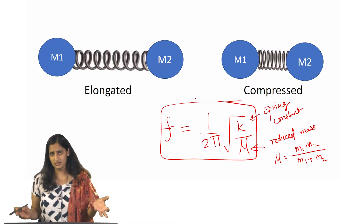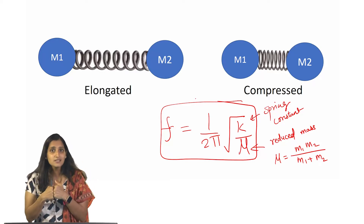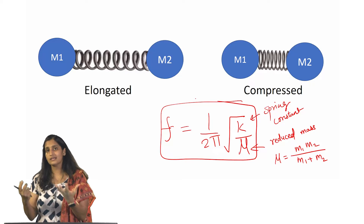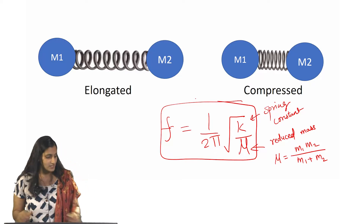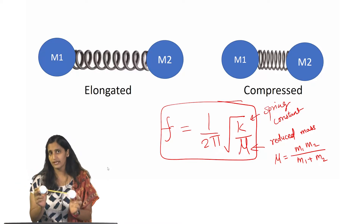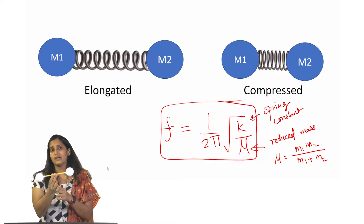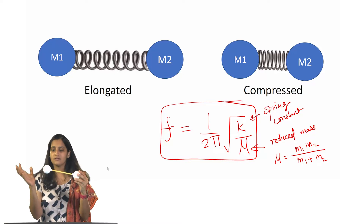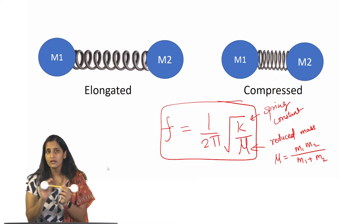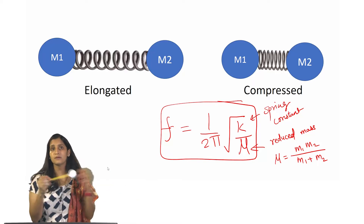What we want to know is: if the spring constant increases, the frequency will also increase; and if the reduced mass increases, the frequency is going to decrease. Now, any bond between two atoms is actually like a spring. We typically represent it with a ball-and-stick model, but remember this bond is not rigid — it is more like that spring we were talking about. If these two atoms were held together with a spring in between, they could come together, go apart, and vibrate.